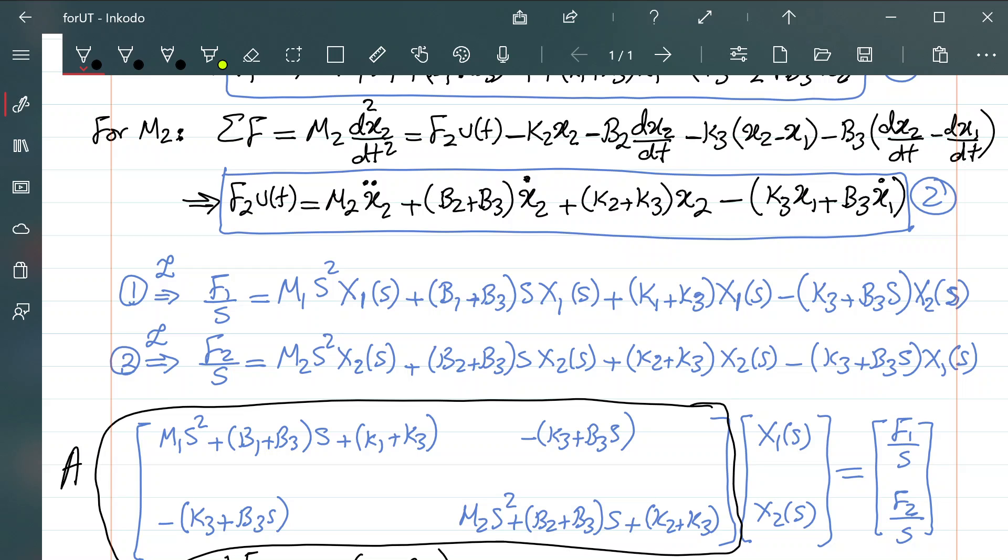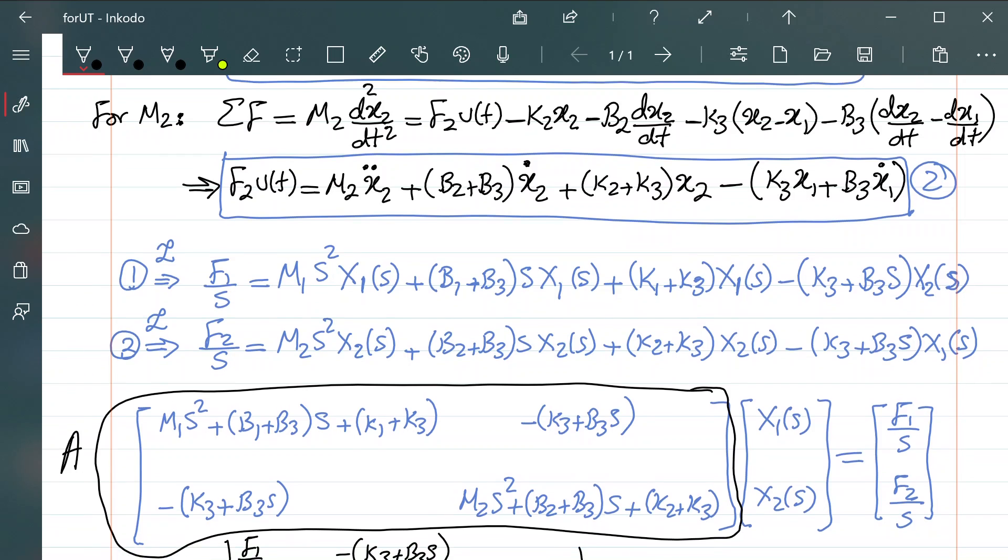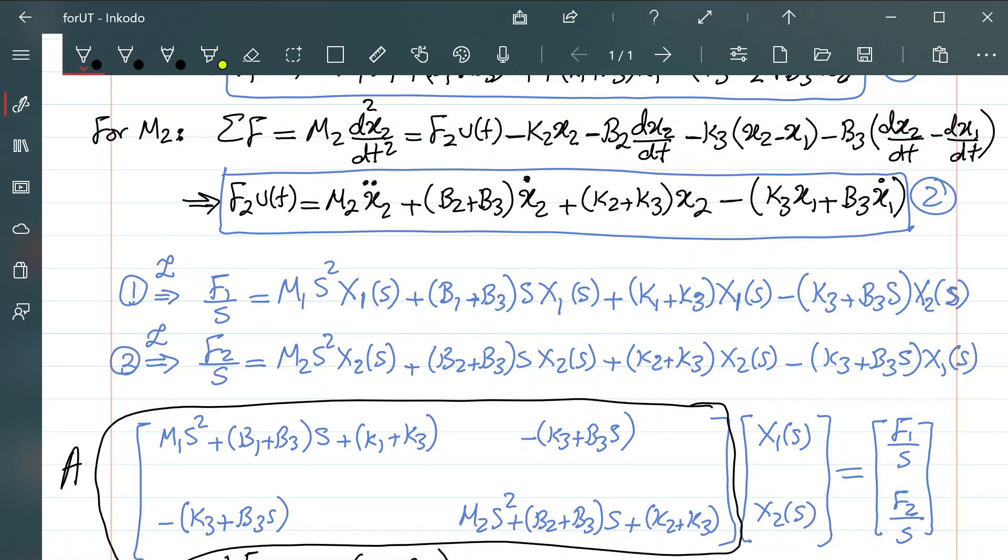But, this would be the extent that I would like to cover because from this point on, it's just a matter of tedious math work. Depending on the given value of parameters, you just simplify x of s, and the same thing with x2 of s. And then using partial fraction expansion, you get to the point that you can easily convert from s domain back to time domain and find out the x1 of t and x2 of t.